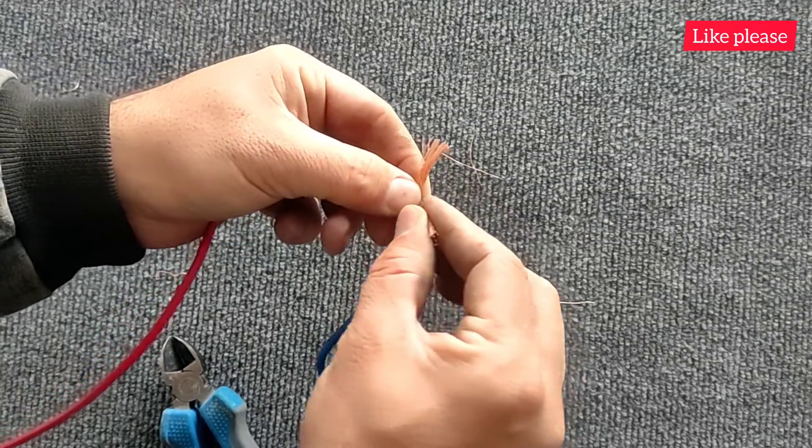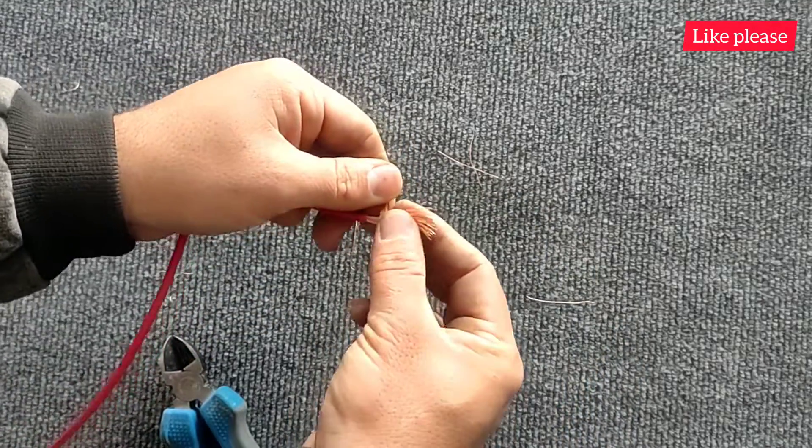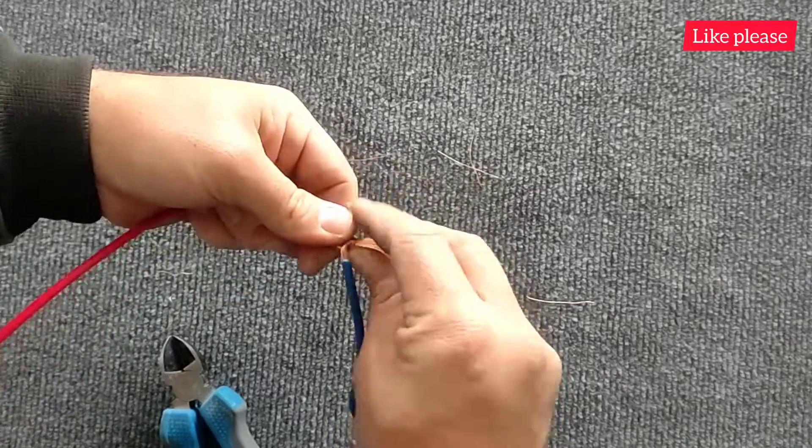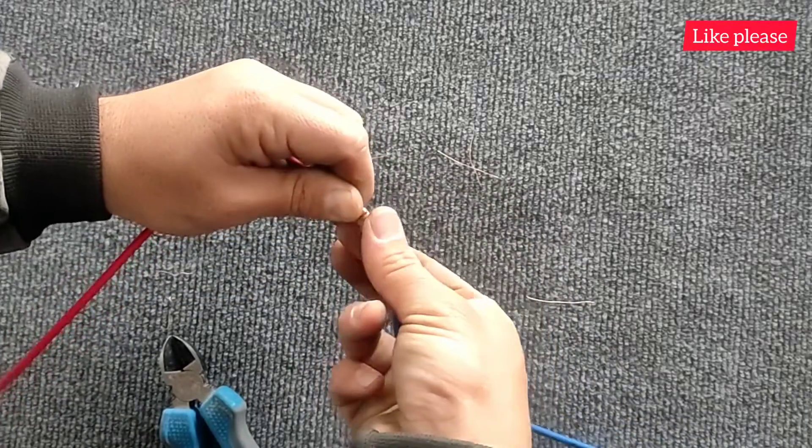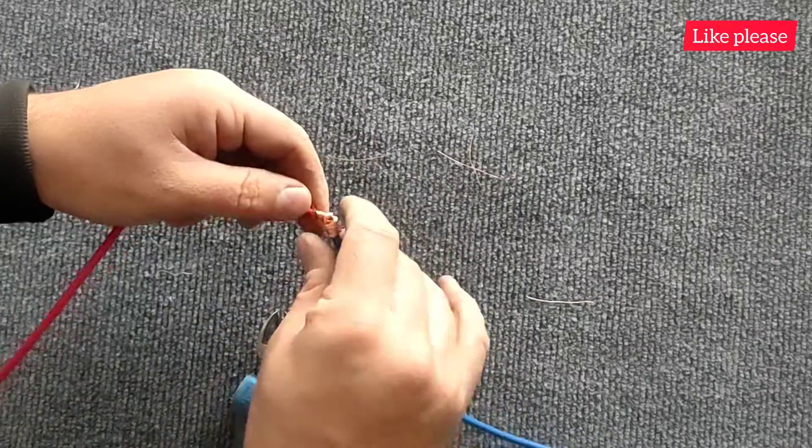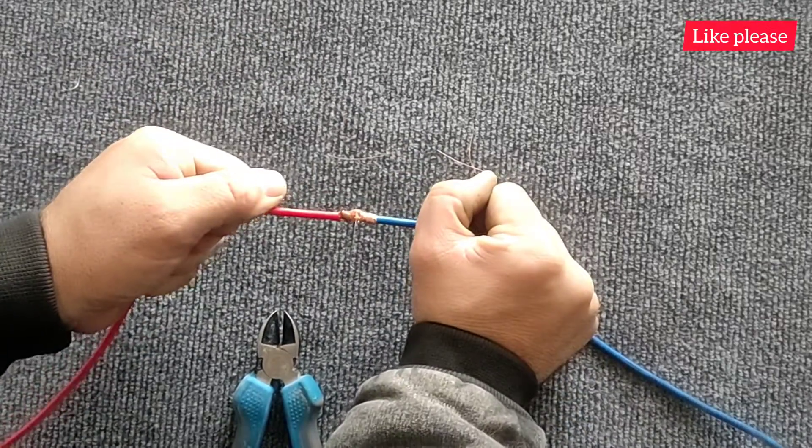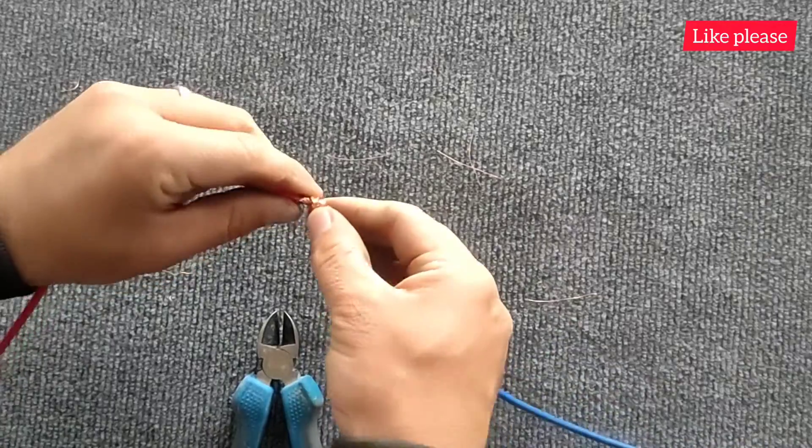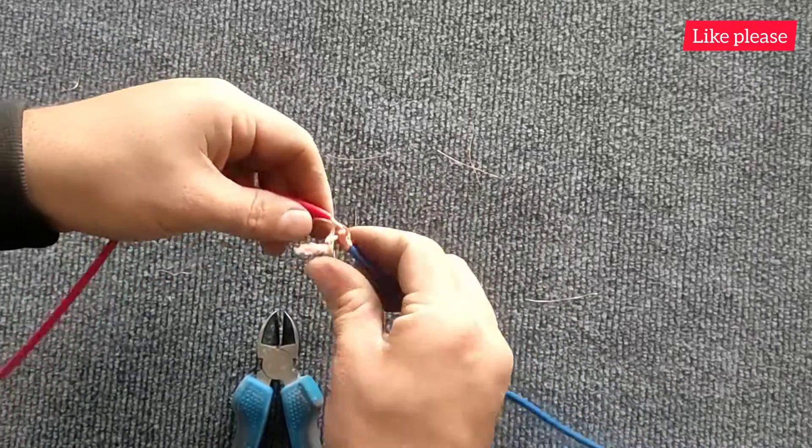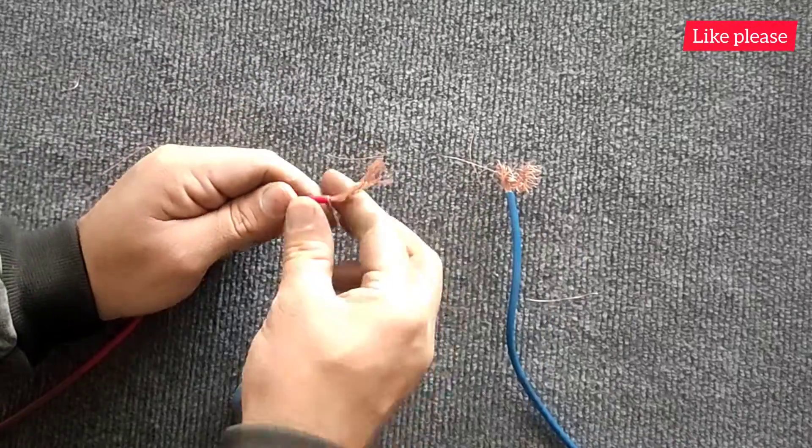In the third method, we first tie the wires together and then act like the second method. This method is apparently good and a strong connection is made between the wires. But if you look carefully, you will see that each wire wraps around itself and therefore a good connection is not made between the wires.